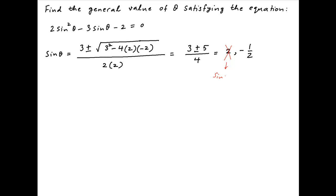However, sin θ equals 2 is ruled out since sin θ is always less than or equal to 1. Therefore, the only possible solution is sin θ equals minus half.